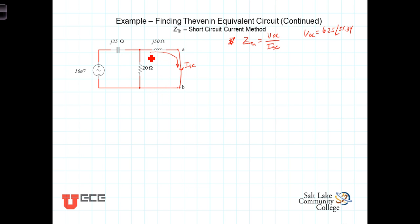The current flowing through that J50 ohm inductor will be the voltage at this point divided by the J50. So let's call that voltage there V1. And we can then say that I short circuit is equal to V1 divided by J50. So our problem now becomes determining what V1 is.